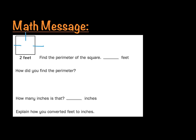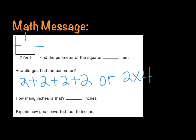We're going to add all of those sides together. So basically we're taking two plus two plus two plus two, or we could say two times four, which is going to give us eight.